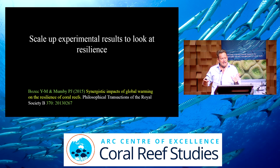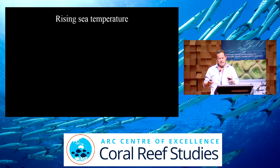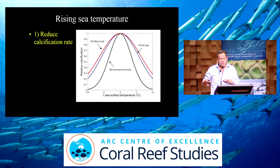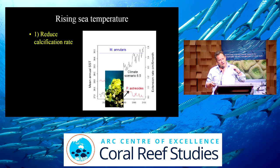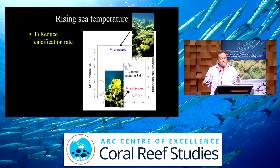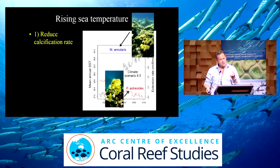The final example is about scaling up results, relevant to people doing more physiological work. We looked at resilience and the dual effects of rising sea temperature on coral. The first effect is reduced calcification rate — corals have an optimal temperature, and if you exceed it, calcification goes down. If you model this for different Caribbean species: Porites astreoides, under current climate change projections over this century, calcification and extension rate both go down. Orbicella annularis has a different strategy — its calcification also declines but it maintains extension rate, just producing a more porous skeleton. The second effect, of course, is coral bleaching. So there are two effects of temperature.